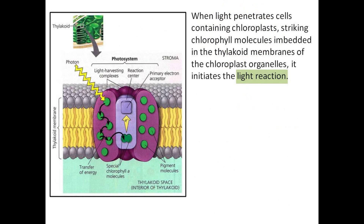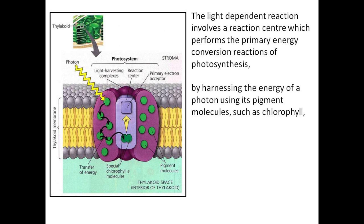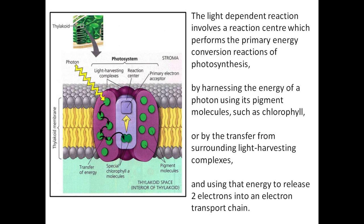When light penetrates cells containing chloroplasts, striking chlorophyll molecules embedded in the thylakoid membranes, it initiates the light reaction. The light-dependent reaction involves a reaction center, which performs the primary energy conversion reactions of photosynthesis by harnessing the energy of a photon using pigment molecules such as chlorophyll, and using that energy to release two electrons into an electron transport chain.